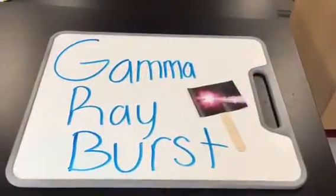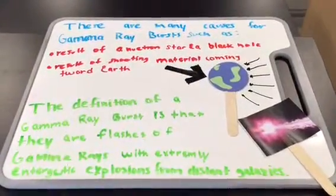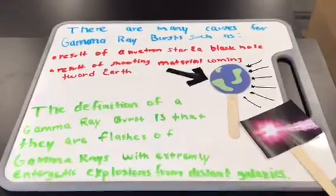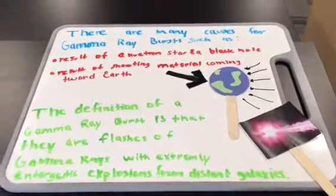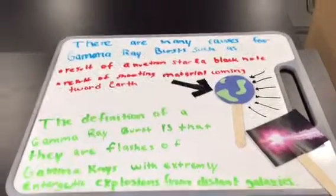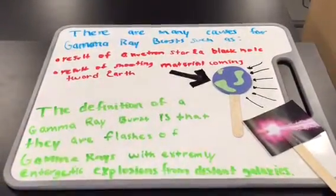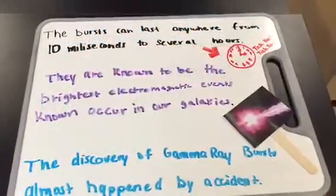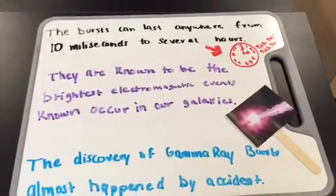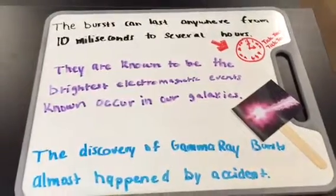There are many causes for gamma ray bursts, such as a result of a neutron star in a black hole, or a result of shooting material coming toward Earth. The definition of a gamma ray burst is that they are flashes of gamma rays with extremely energetic explosions from distant galaxies. The burst can last anywhere from 10 milliseconds to several hours. These are known to be the brightest electromagnetic events known to occur in our galaxies.